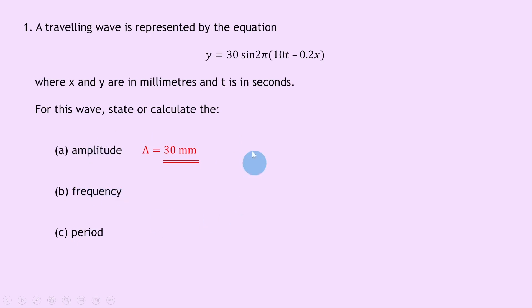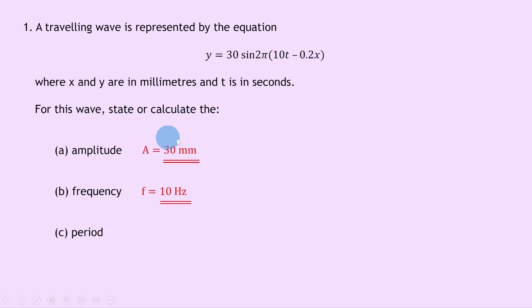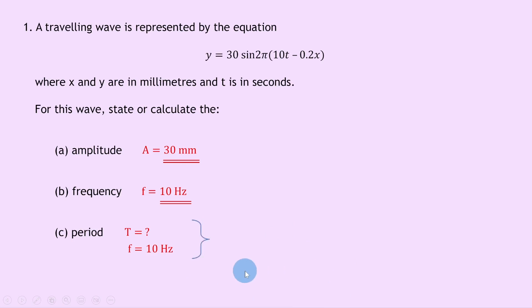For part b, to calculate the frequency, remember the bit in the brackets will be f times t minus x over lambda, so our f must be 10 hertz. So frequency f equals 10 hertz. For part c, we need to calculate the period. If we know the frequency, we can calculate the period. We use the equation T equals 1 over f, substituting in 10 to get 1 over 10, which gives us 0.1 seconds.